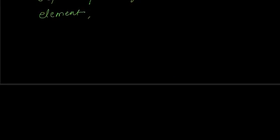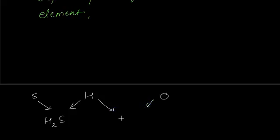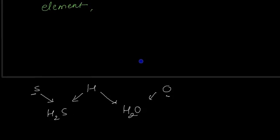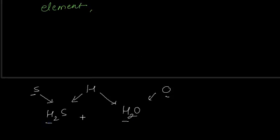So if you have three elements — S, H, and O — sulfur can combine with hydrogen to give H2S, which is a gas. Similarly, hydrogen can combine with oxygen to give H2O. So sulfur as well as oxygen can combine with hydrogen to give two different compounds: H2S and H2O. Here, the mass of hydrogen is fixed at 2 AMU in both cases.